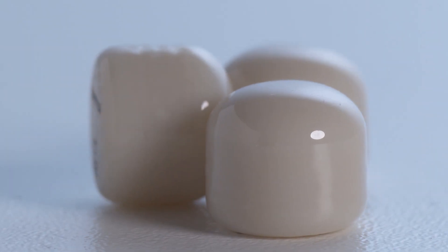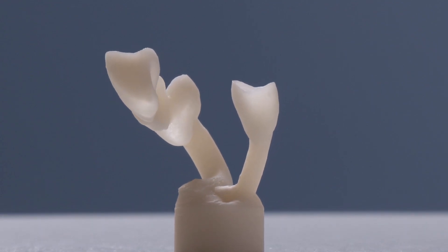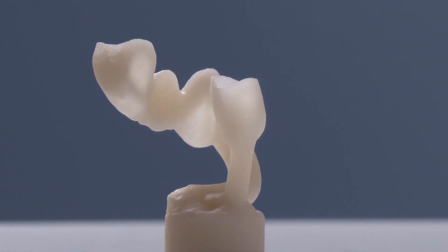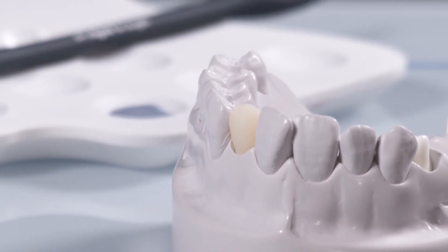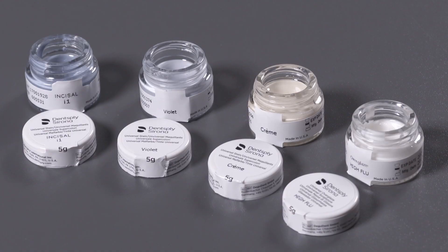Due to the exceptional light optical properties of Seltra Press, you can achieve excellent aesthetic quality already in a monolithic restoration. Customization with only three universal stains and the final glaze can be carried out quickly and accurately.